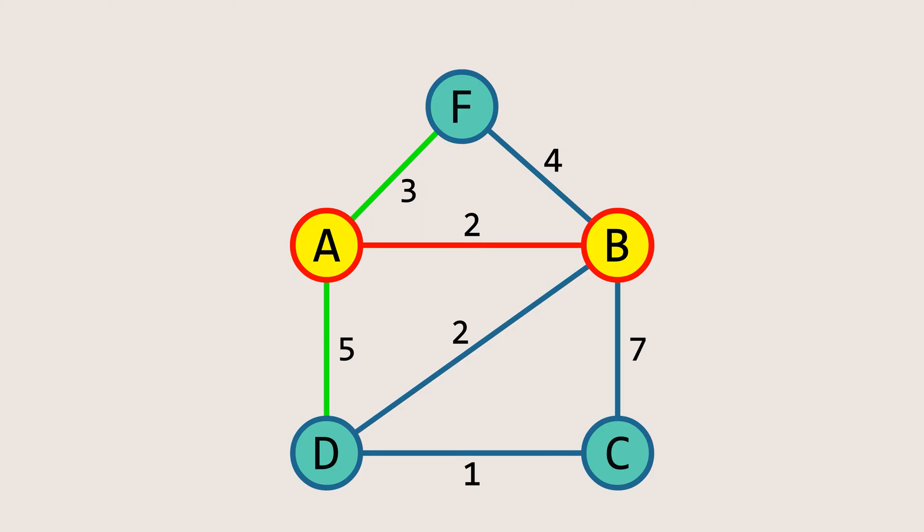Next, we examine all the edges connected to node B to continue building the tree. Among all the highlighted edges, we select the one with the minimum cost. In this case, it's the edge BD with a weight of 2, so we add this edge to our spanning tree.